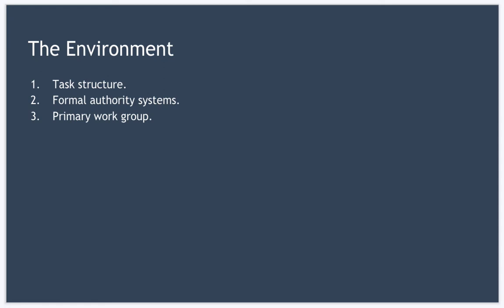Next we have formal authority systems, and these refer to the policies, the controls, and the rules of the organization. Now these instruct employees on what to do and what not to do in different situations. If the formal authority structure is clear then leaders should really avoid a directive telling style of leadership. On the other hand if formal authority structure isn't that clear then a directive or telling leadership style can be very beneficial.